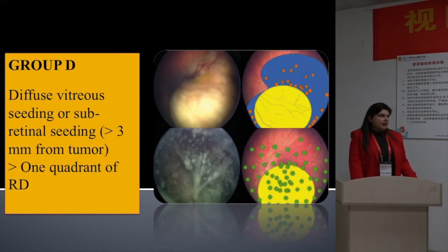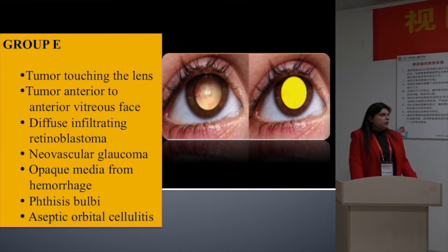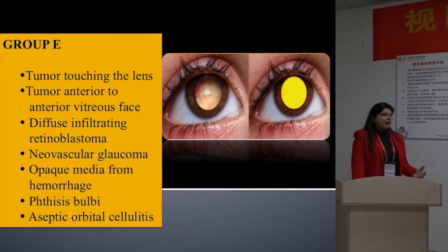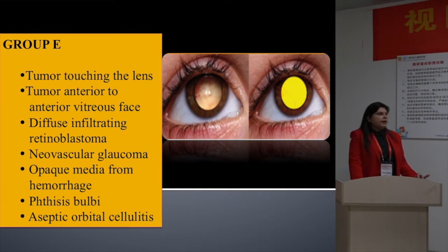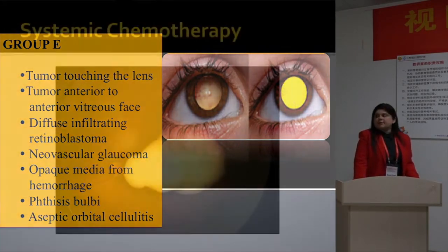Groups B, C, and D are candidates for systemic chemotherapy. Group E — we do not use systemic chemotherapy unless it is bilateral advanced disease and we are trying to save at least one eye. Unilateral Group E cases we treat only by upfront enucleation. For Group E cases with any of these features present, we do not use systemic chemotherapy at our center.